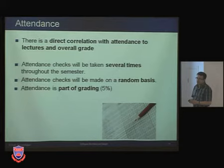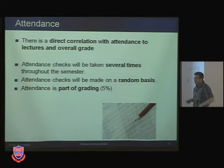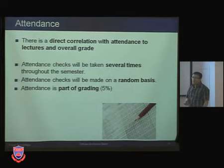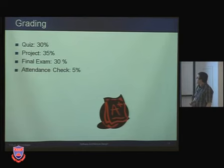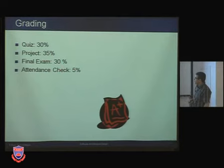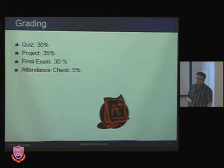For every course I see a direct correlation between attendance at lectures and the overall grade — even without checking, it follows naturally. Attendance checks will be taken several times at random as part of grading, worth 5%. Grading breakdown: three quizzes at 10% each totaling 30%, project 35%, final exam 30%, and attendance check 5% — totaling 100%.